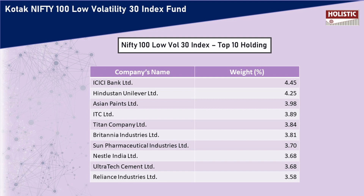Since Nifty 100 is a large cap index, all well-known companies are represented here. Based on the low volatility criteria, 30 stocks are shortlisted. Each stock has less than 5% exposure, meaning stock-level concentration is low and there is enough diversification at the stock level.